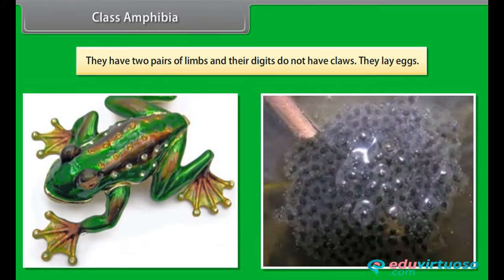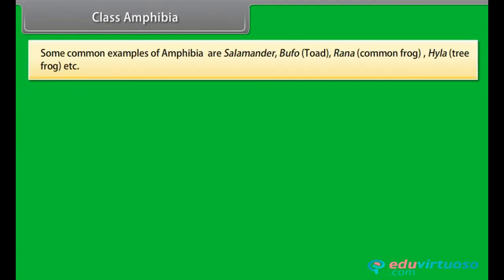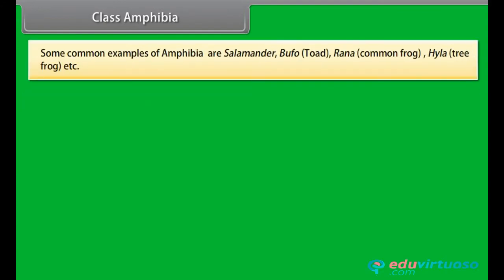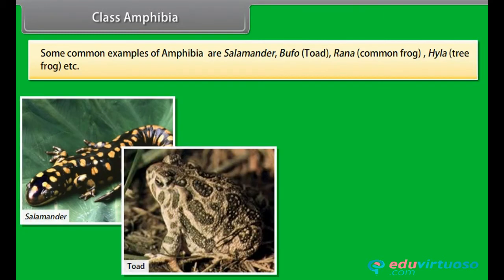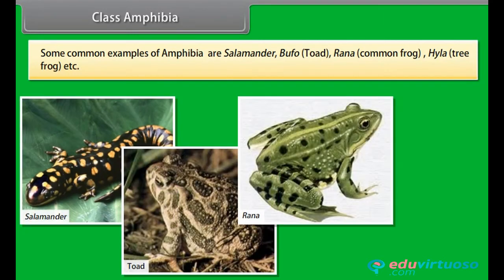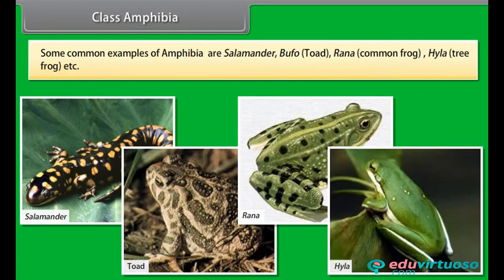They lay eggs. Some common examples of Amphibia are Salamander, Bufo, toad, Rana, common frog, Hyla, tree frog, etc. Class Reptilia.